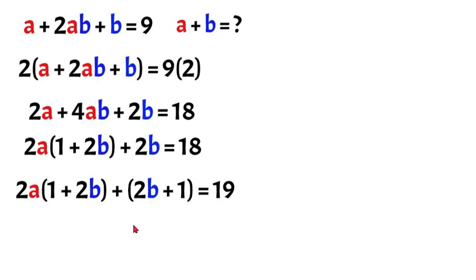Now we can factor out 1 plus 2b or 2b plus 1 either way which will leave us with our 2a and there's technically a 1 value in the front. So if we move out our 2b plus 1 and then that will be times our 2a plus 1 is equal to 19.